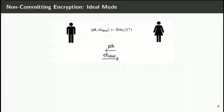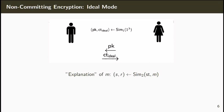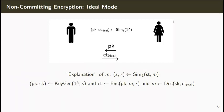In the second mode, which we'll call the ideal mode, we have two additional algorithms. The first one, SIM1, creates a transcript composed by a public key and a ciphertext without receiving any message as input. Later, a second algorithm, SIM2, receives any message as input and outputs random coins that explain the transcript with respect to this new message. That is, we can run the key generation algorithm, the encryption algorithm and the decryption algorithm as before and check that the values are well formed. We additionally require that the coins generated in the ideal mode are computationally indistinguishable from coins created in the real mode.